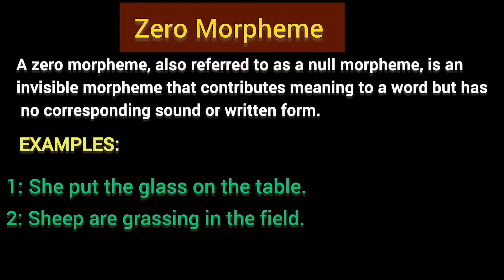'Sheep are grazing in the field.' Observe the noun 'sheep.' This word also has two morphemes: it is itself a morpheme, and another morpheme is that it shows plurality. Though we cannot see or hear it, and there is no separate form or sound for it. Therefore, it is called a zero morpheme or null morpheme.